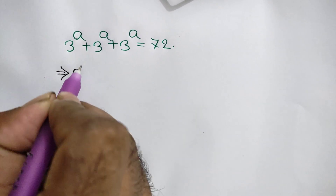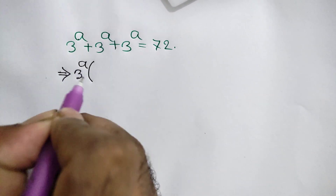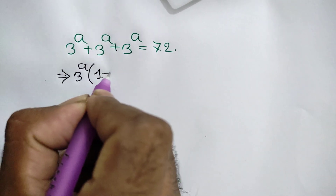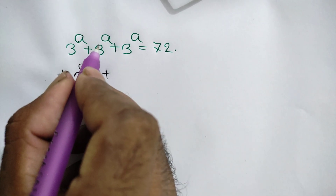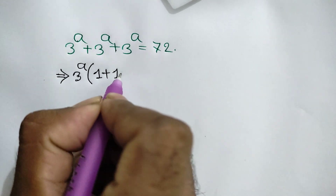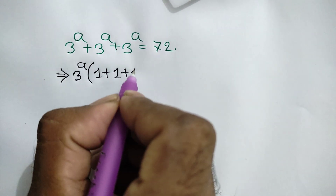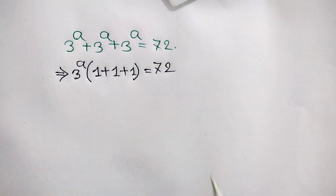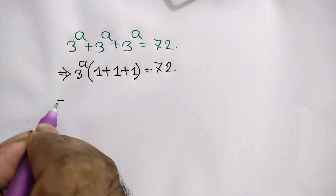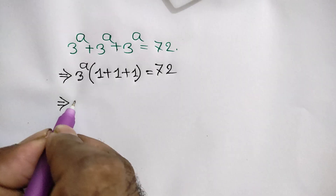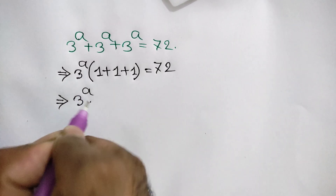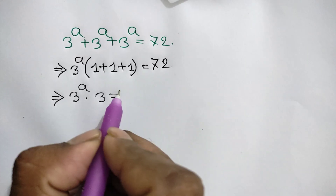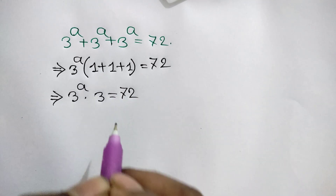Taking 3 to the power a as a common factor, we get 3 to the power a times (1 plus 1 plus 1), which is 3 to the power a times 3, and that is equal to 72.